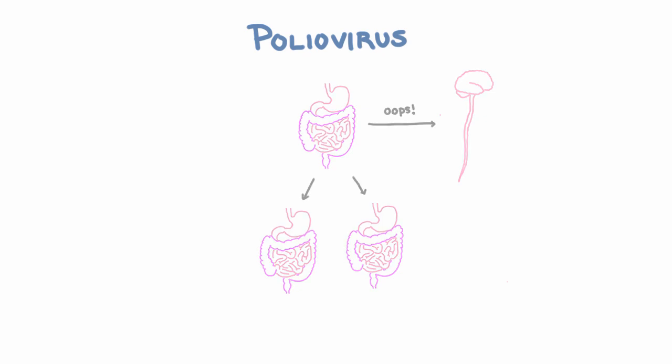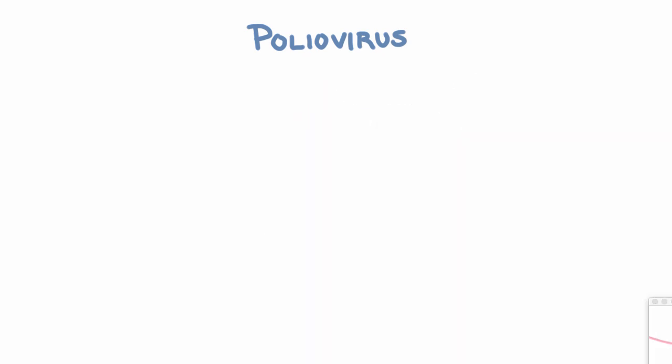So you need to reprogram your idea of poliovirus. Polio can present in many ways, and almost all of them make sense if you understand the pathophysiology. Each clinical syndrome that it causes corresponds to the virus stopping at a certain step in the chain of steps we talked about — from the GI tract all the way down to the CNS.